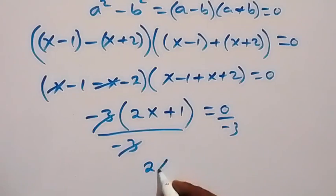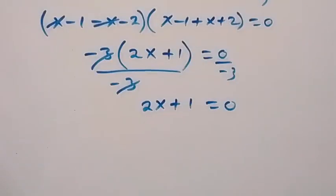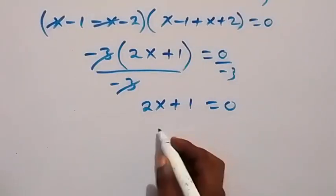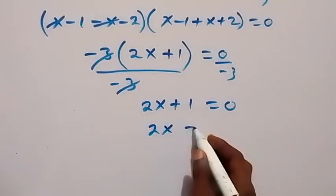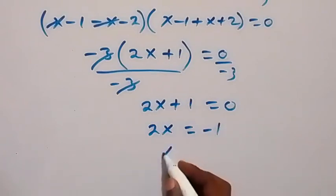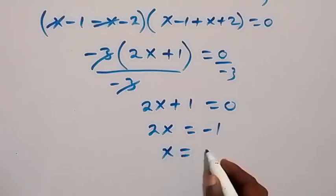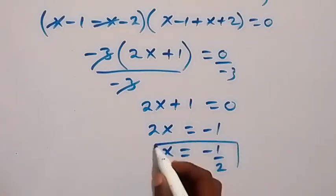So we have 2x plus 1 equals 0. From there we take 1 here, it becomes minus 1, so 2x equals minus 1. And x, the value goes higher, so x will be minus 1 over 2. We have the value of x from here to be minus 1 over 2.